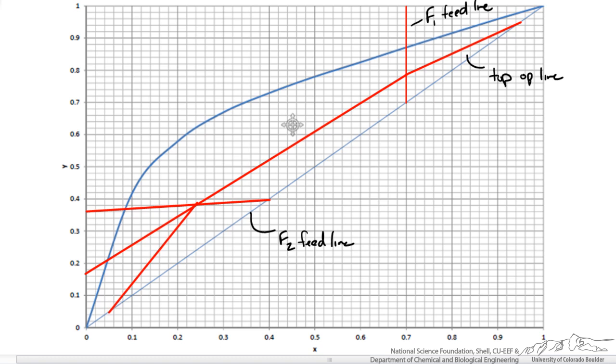We know that where these intersect our stripping section must start and go to our bottom composition on the x equals y line. You could show this using the material balances and keep going, or you could just draw the line on the McCabe Thiele diagram. So now we have our 5 operating lines. I am just going to clean this up a little bit.